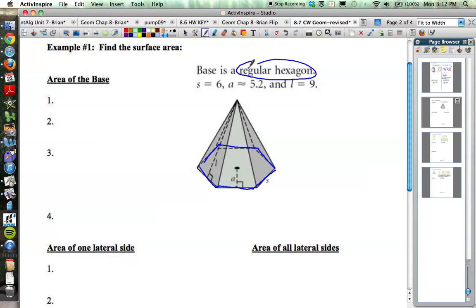This is a review from a couple days ago in class. The area of any regular polygon is apothem times side length times number of sides divided by 2. And we're given those components in this particular problem.